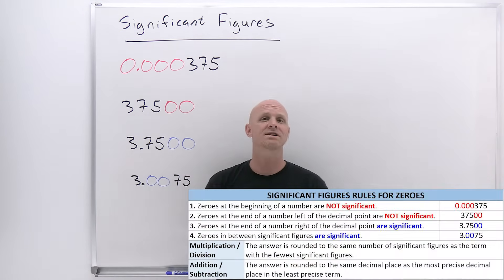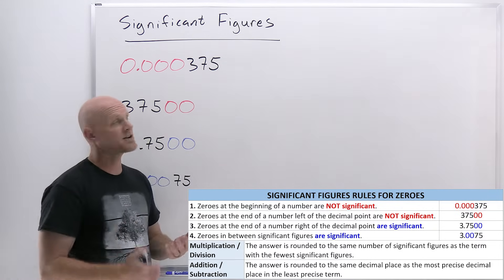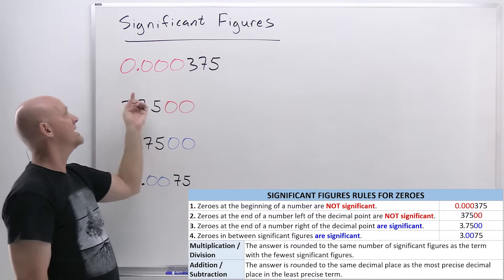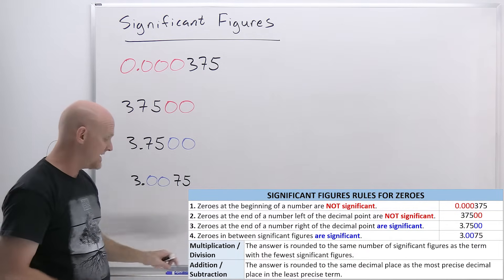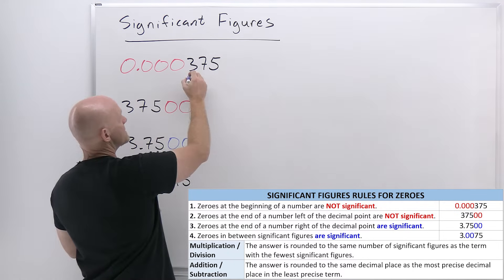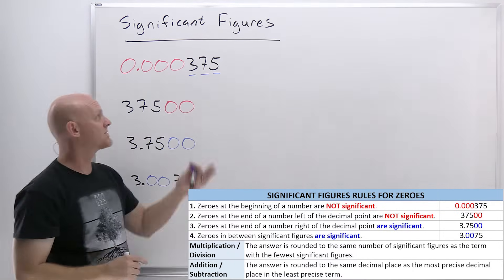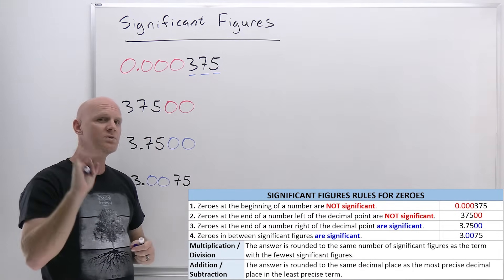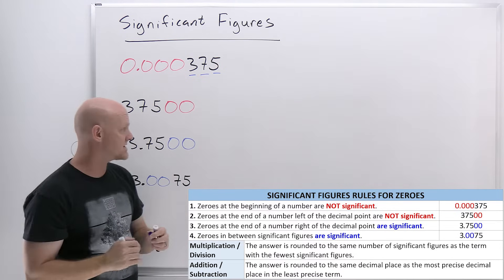The first rule says that zeros at the beginning of a number are not significant. This typically happens with a number smaller than one. Notice it starts with a big string of zeros — we think of those as just placeholders, and they are not significant. So the non-zero digits are significant, but the zeros are not. The number 0.000375 only has three significant figures, or three sig figs as we say for short.